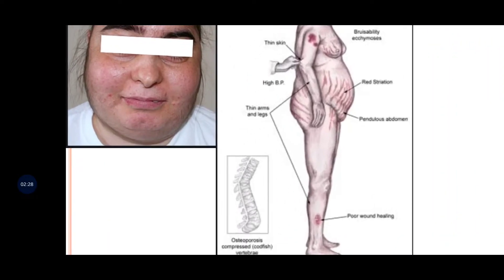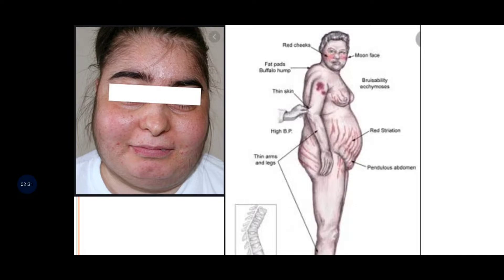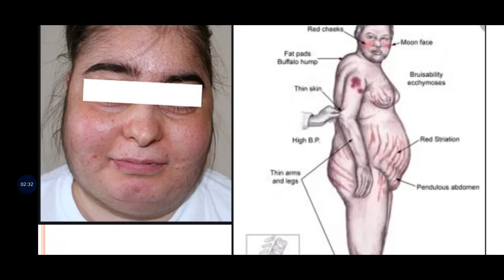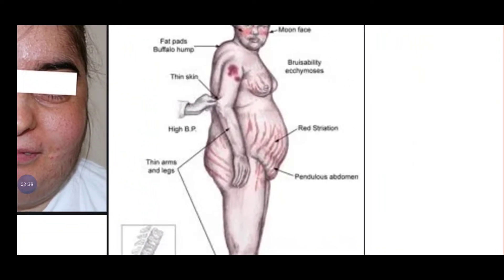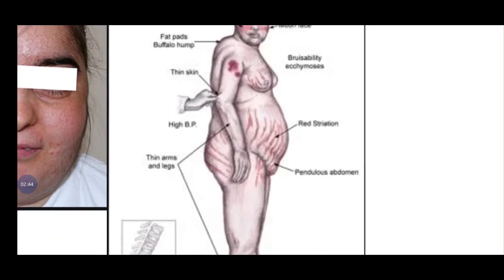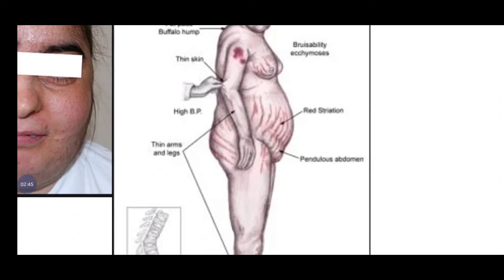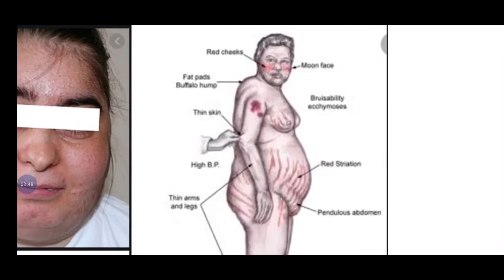As you can see in this image, there is the moon face — a very round face. There is bruisability all over the person's body, thin skin, and red striation. As you can see on the abdomen, there is red striation and bruisability.